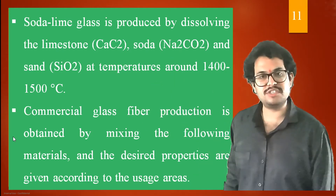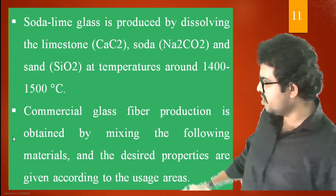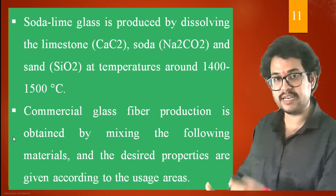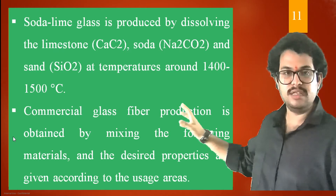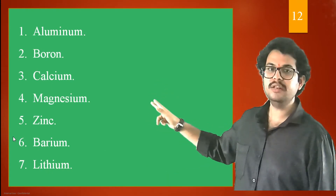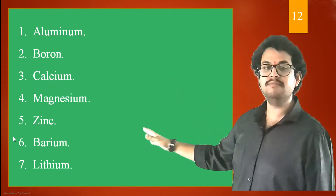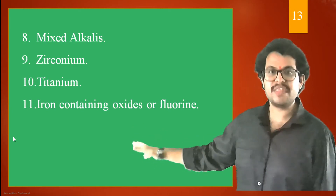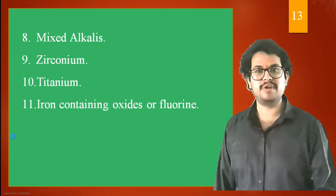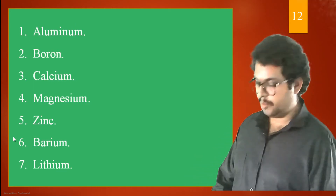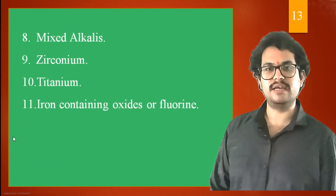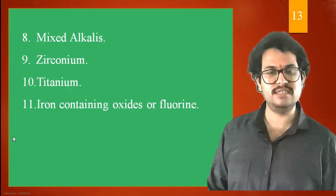Commercial glass fiber production is obtained by mixing the following materials to get desired properties: aluminium, boron, calcium, magnesium, zinc, barium, lithium, mixed alkalis, zirconium, titanium, and iron containing oxides or fluorine. Make a note of this list as it is important.